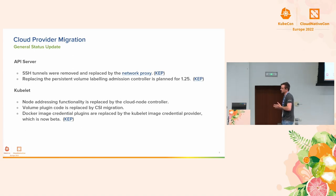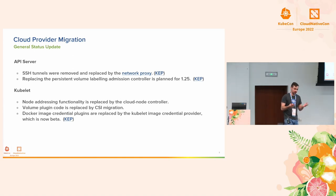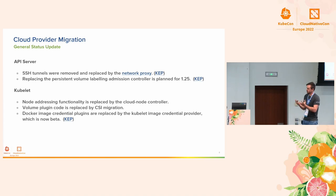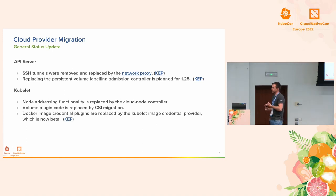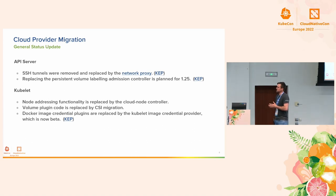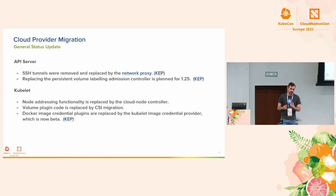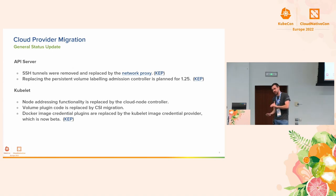Finally, the Kubelet, when it starts a pod, needs to pull the Docker image for that pod. There are a couple of plugins — for example, ECR, GCR, and maybe a few others — that have SDK logic to get credentials to pull the image. That's being replaced by something called the Kubelet image credential provider, which is just a binary that sits next to Kubelet. You have a configuration file you give to Kubelet, and then Kubelet execs that binary to get the credential it needs to pull the image.